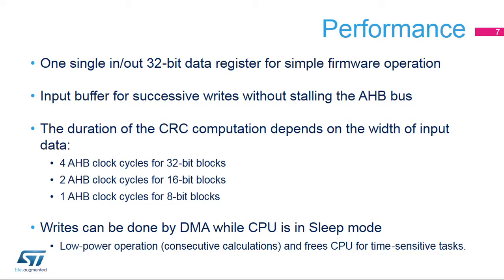The CRC data register includes an output buffer which allows for immediate writes by the CPU or DMA peripheral of a second data word without waiting for any wait states due to an active CRC computation. The CRC data register can be accessed by word, right-aligned half-word, and right-aligned byte.